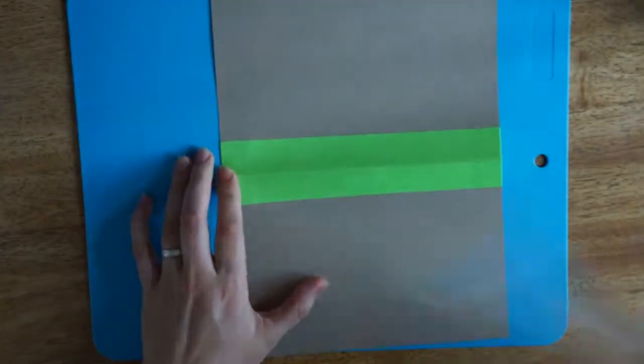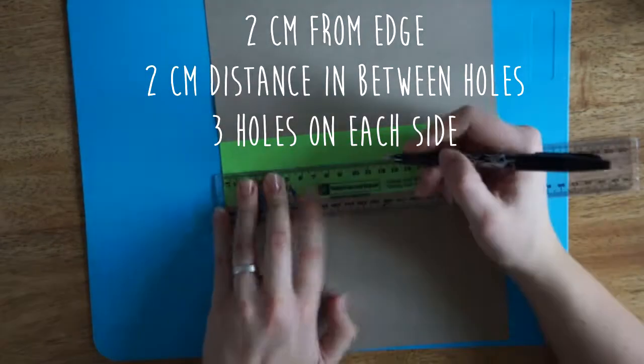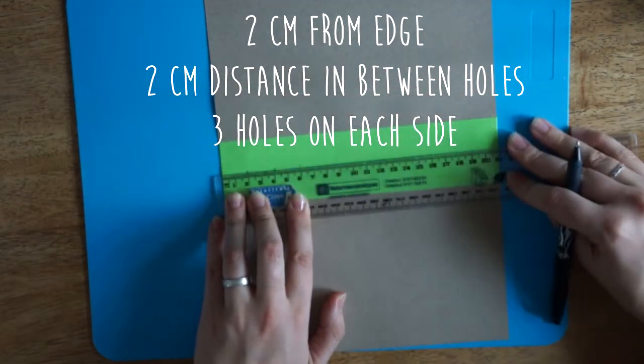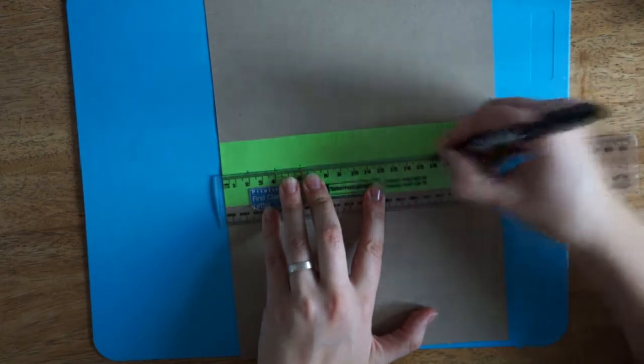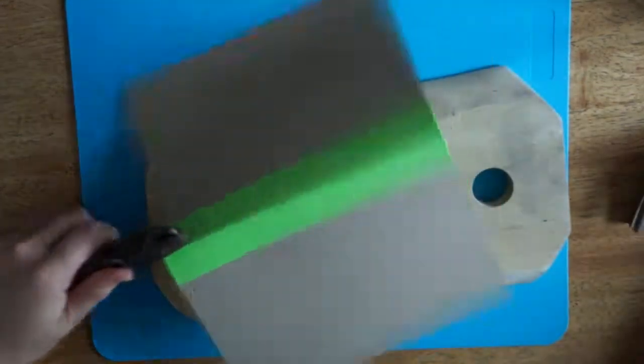Next up is making the holes for the stitching, and I used a nail and a hammer since I don't have an awl. The first page gets used as a template for the rest of the signatures and the cover.